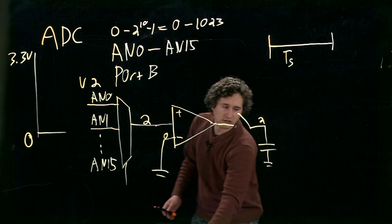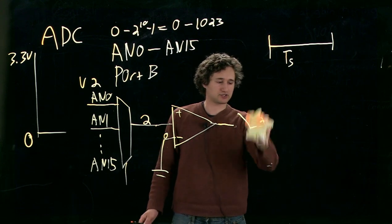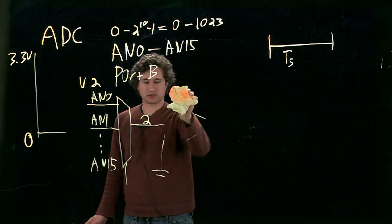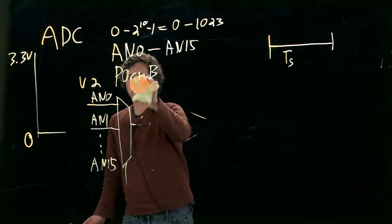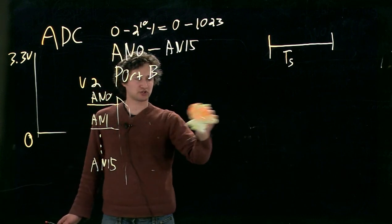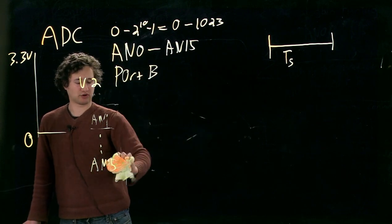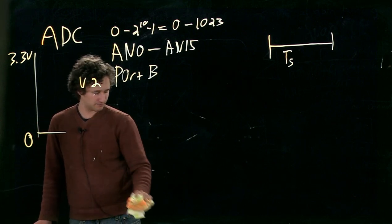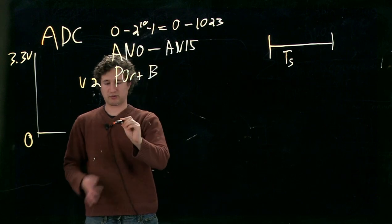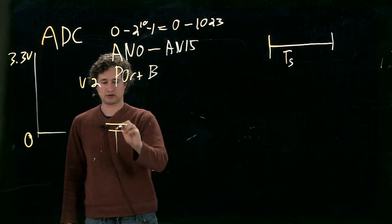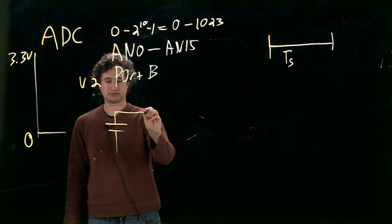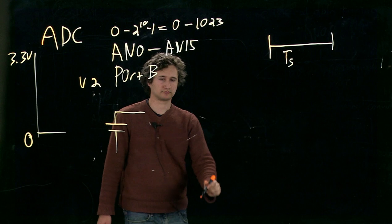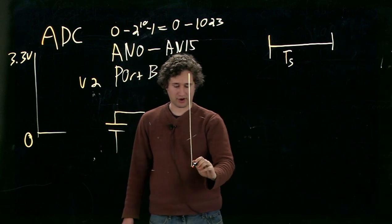The next step in this is the conversion step. So this is where we're going to actually convert the voltage that we've measured into a number. So the way that this works is as follows. Because of the sample circuit, this capacitor now holds the voltage that was on the pin.